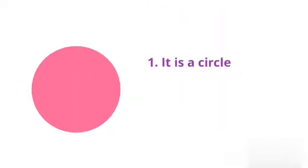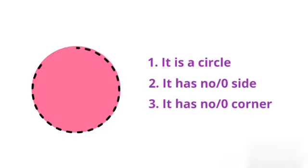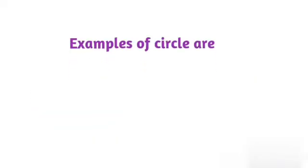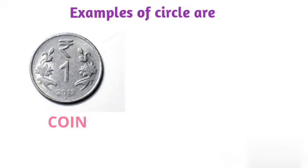Which is this shape? It is a circle. It has no side. It has no corner. Some examples of circle are coin and clock.